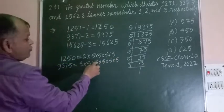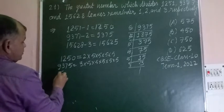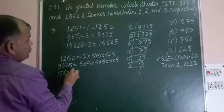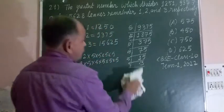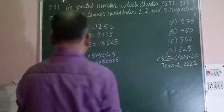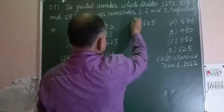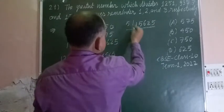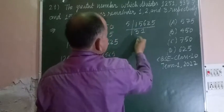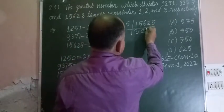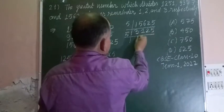Now we need the factors of 15625. We divide 15625 repeatedly by 5.